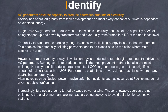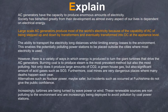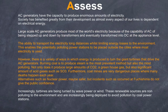Here is the answer. They start off simply by saying AC generators have the capacity to produce enormous amounts of electricity — very low order, essentially an identification. They then describe how this benefits society. Then they go to the explain part: the scaling up of voltage using transformers — cause and effect for why we transport electricity at higher voltages. Only then do they discuss the impacts on the environment.